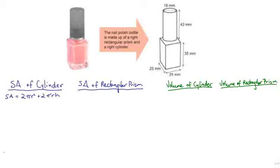Using our previous knowledge, or simply by searching, the surface area of a cylinder equals 2πr² + 2πrh, where r is the radius and h is the height. One thing to notice is that only one end of the cylinder is exposed, so we only calculate the top. Therefore, we alter the formula to πr² + 2πrh instead of 2πr².